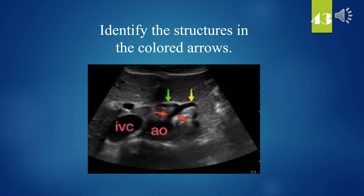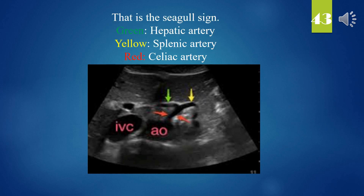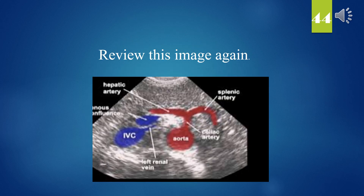Identify the structures in the colored arrows. That is the seagull sign. Green: hepatic artery. Yellow: splenic artery. Red: celiac artery. Pause the video and review this image again.